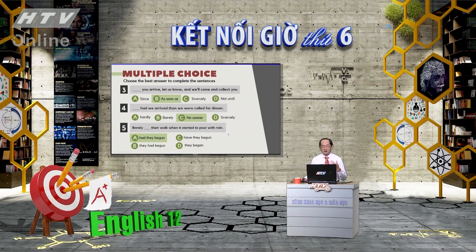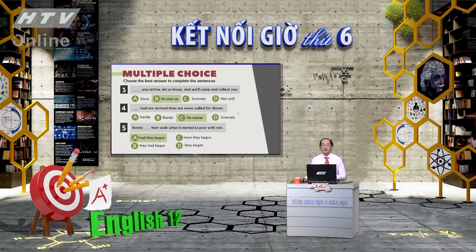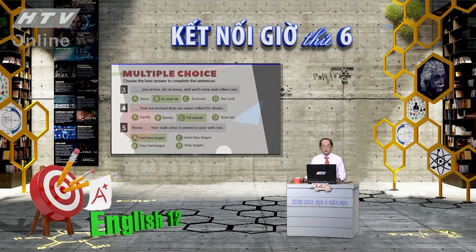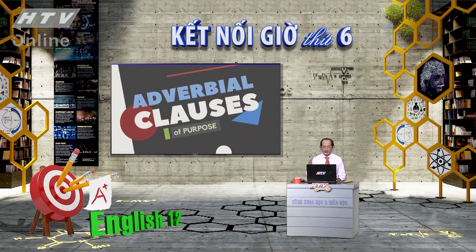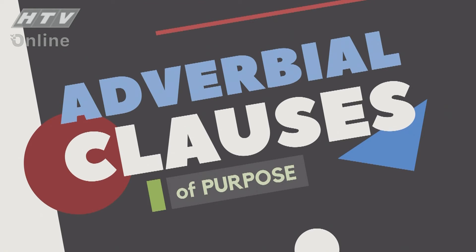Trên đây thầy đã trình bày lý thuyết và một số câu ví dụ, bài tập về Adverbial Clause of Time. Tiếp theo đây, chúng ta sẽ chuyển sang một dạng Adverbial Clause khác mà chúng ta cũng hay gặp trong chương trình - đây cũng là dịp ôn lại kiến thức. Phần tiếp theo: lý thuyết và bài tập về Adverbial Clause of Purpose - mệnh đề trạng ngữ chỉ mục đích.